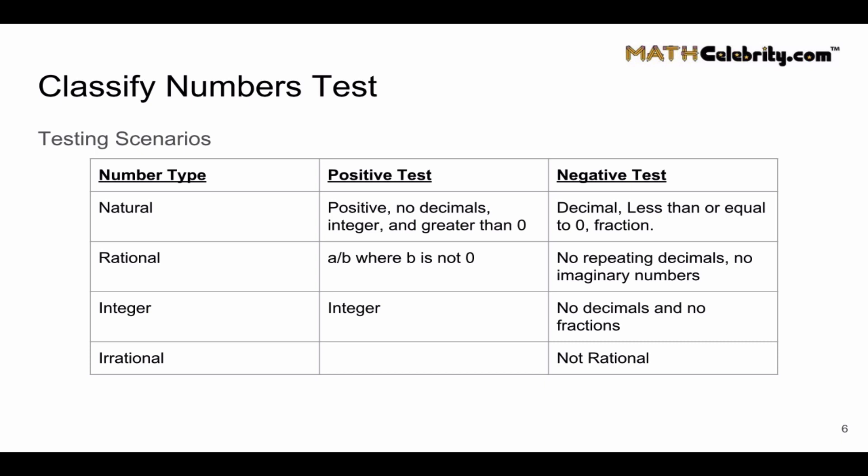We've got natural, rational, integer, and irrational. Notice the positive test for irrational is really the negative test for rational. So you're seeing whether or not a number is rational, and then if it's irrational, that's the opposite of rational.